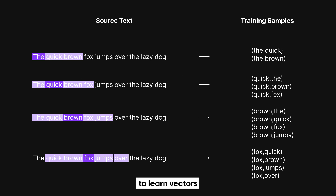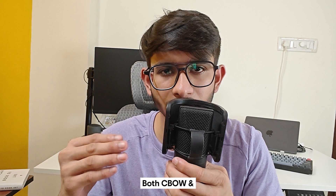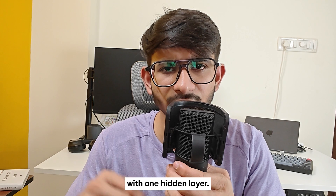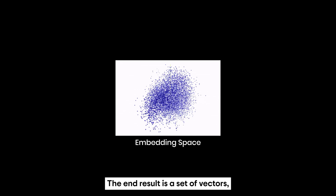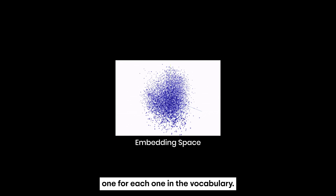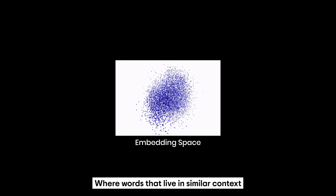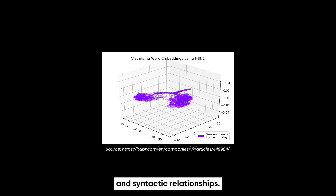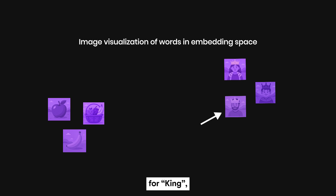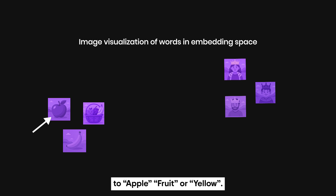Skip-gram learns to guess the neighbors from the word, forcing the model to learn vectors that position similar words with similar neighboring distributions. Both CBOW and Skip-gram are simple neural networks with one hidden layer — there is nothing magical in their architecture. The magic comes from training on millions of sentences. Over many repetitions, the model adjusts the word vectors to better predict missing words or neighbors. The end result is a set of vectors — one for each word — where words that live in similar contexts are closer together in vector space. For example, king might end up near queen, prince, and royal, while banana would end up closer to apple, fruit, or yellow.